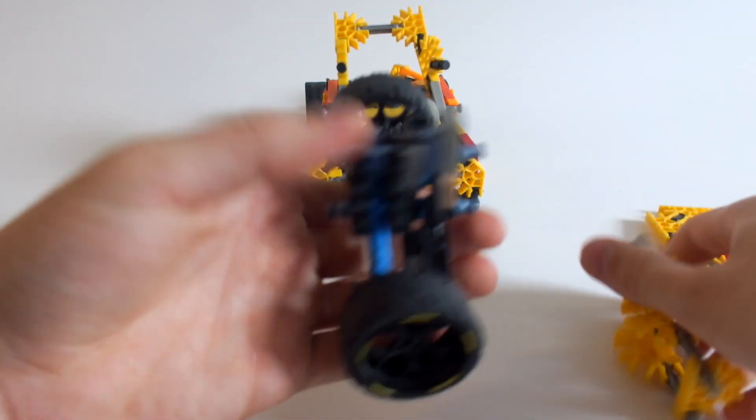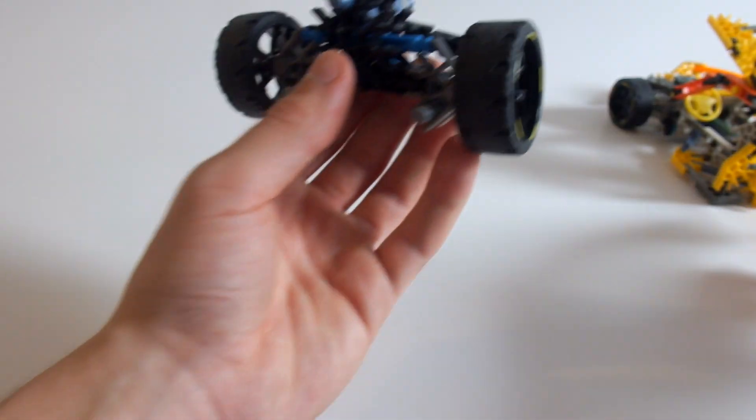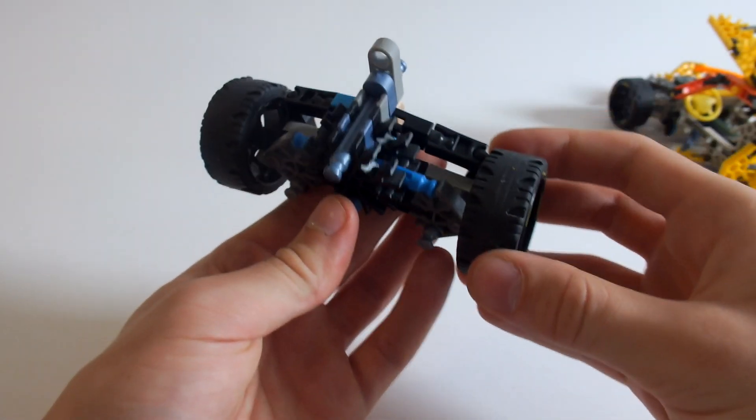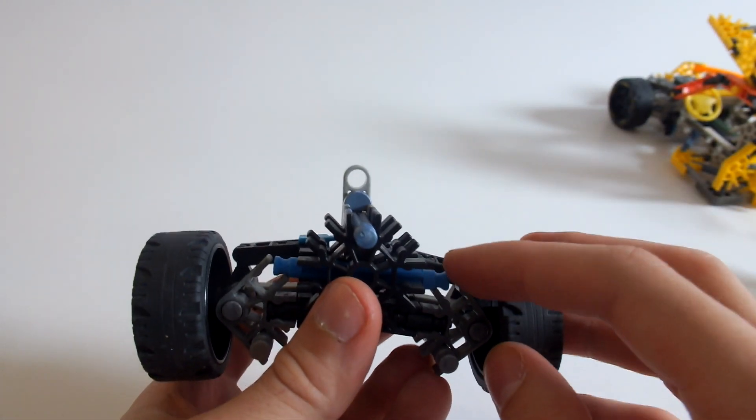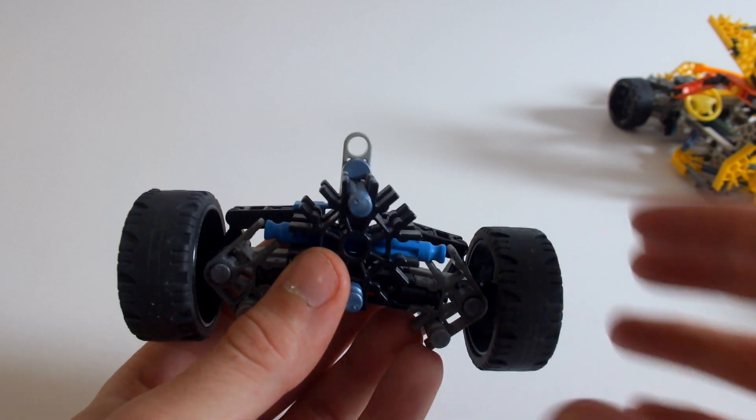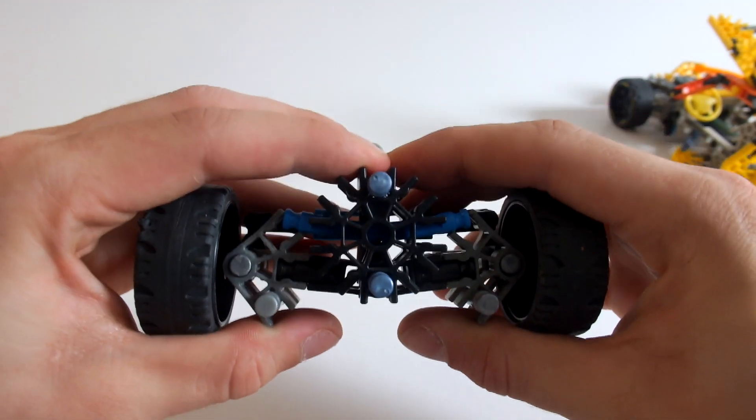And as you can see here this is the rear axle. Let's get this out of the way. Here's the rear axle and there's a blue flexi rod in the middle so you can have this flexible motion as you can see.